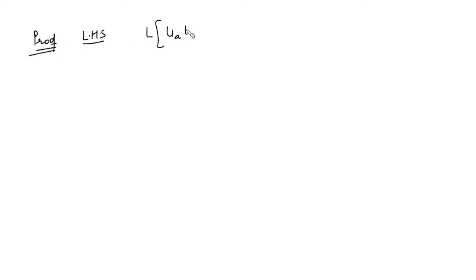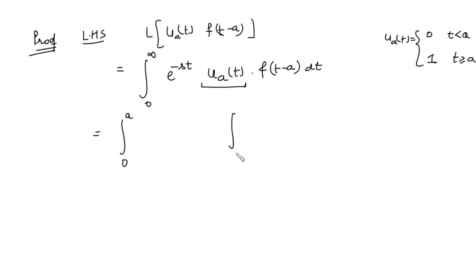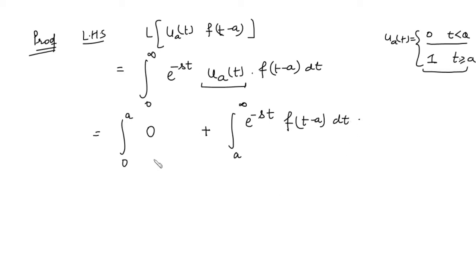Let's see the proof. We consider the left-hand side, which is the Laplace of u(t-a)·f(t-a). By definition, this is the integral from 0 to infinity of e^(-st)·u(t-a)·f(t-a) dt. Substituting the definition of u(t-a) — before 'a' the value is 0, after 'a' the value is 1 — we split this into integrals from 0 to a and a to infinity. Before 'a' the value is 0, so that part vanishes, leaving the integral from a to infinity of e^(-st)·f(t-a) dt.